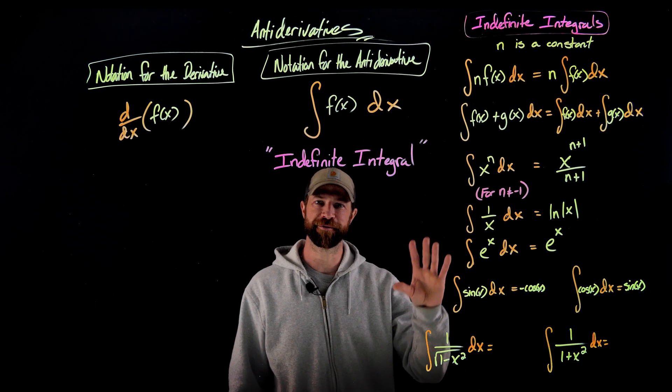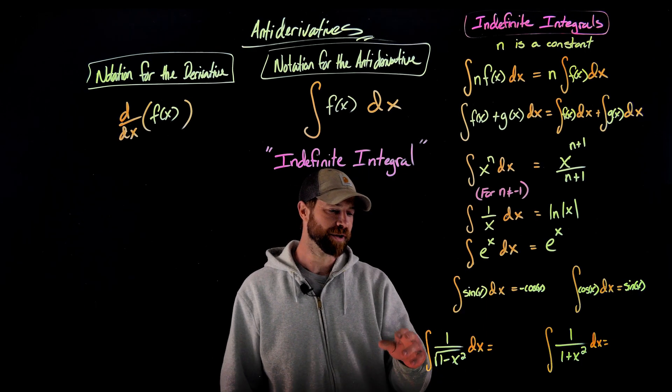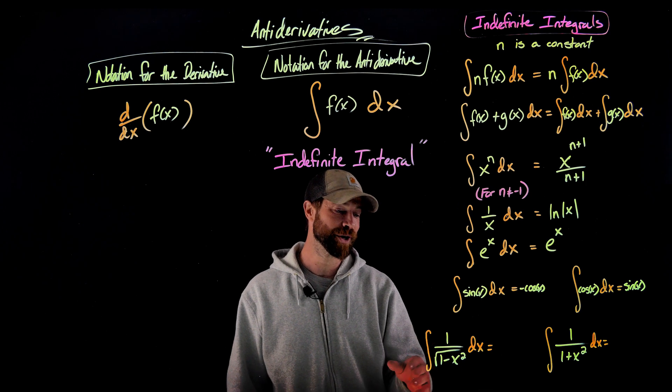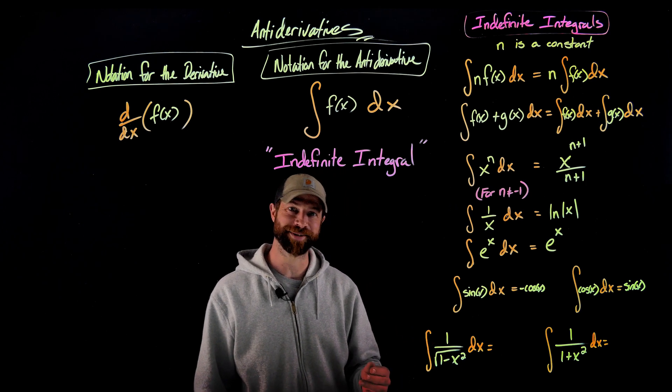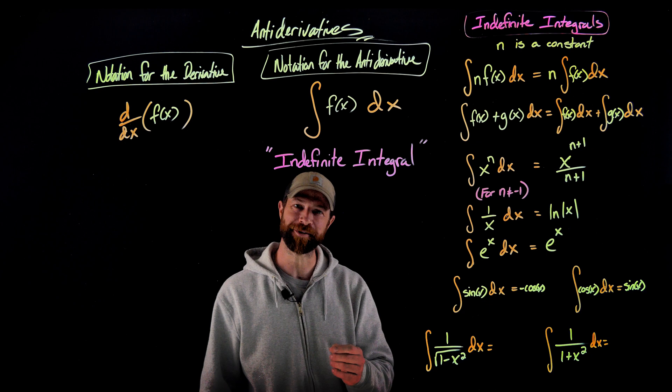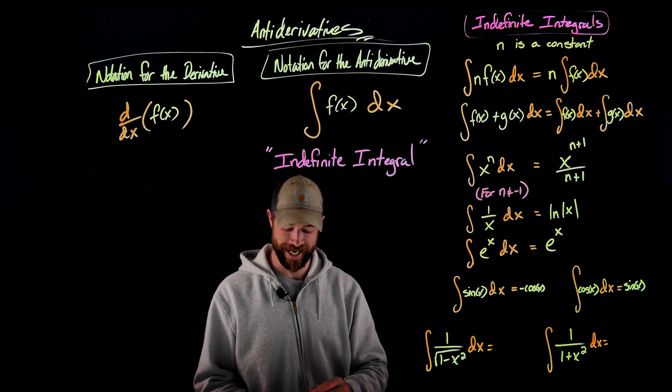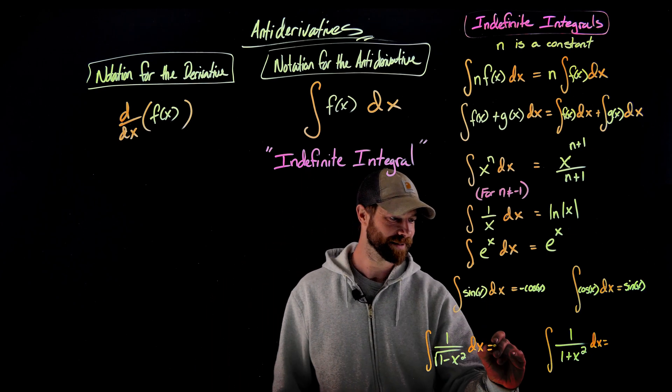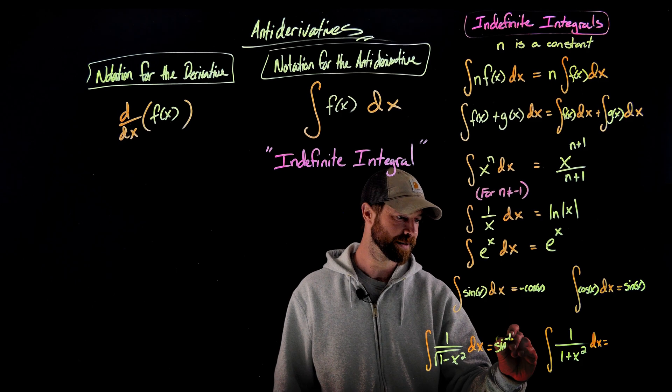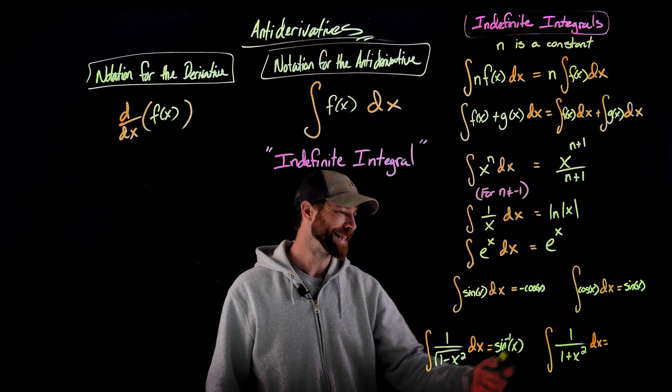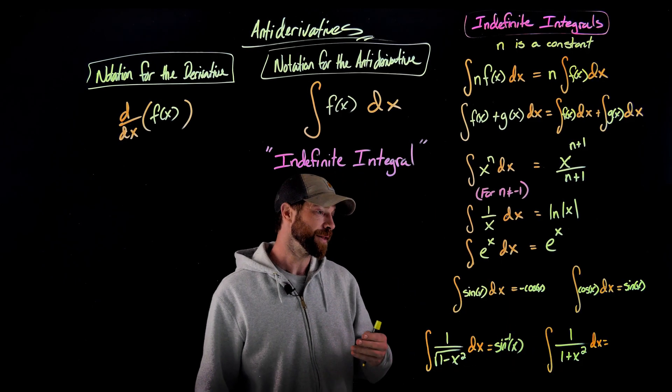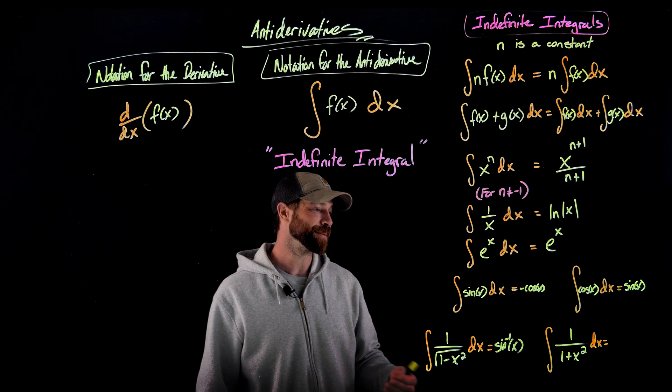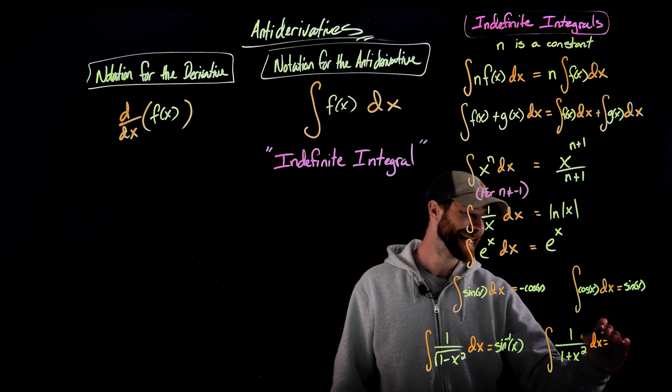And the last two that I'll fit on this list for right now are the indefinite integral of one over the square root of one minus x squared. That was the sine inverse of x, right? When we differentiate the sine inverse of x, we get that. So this is the sine inverse of x. And in this case right here, the integral of one over one plus x squared is the tangent inverse.